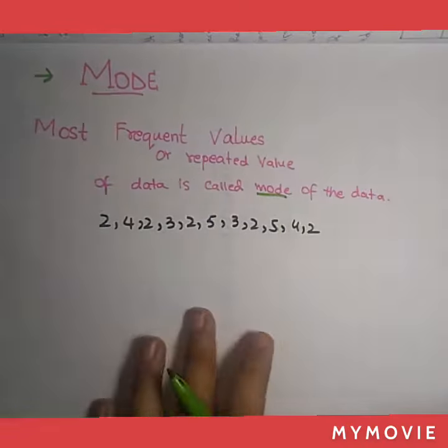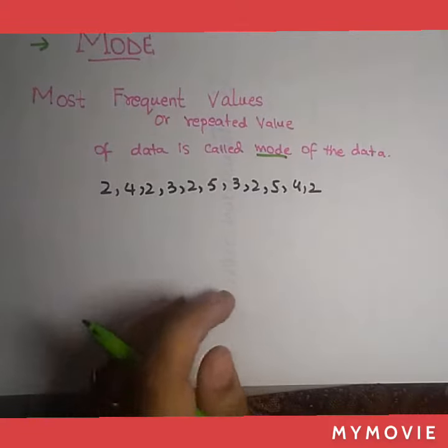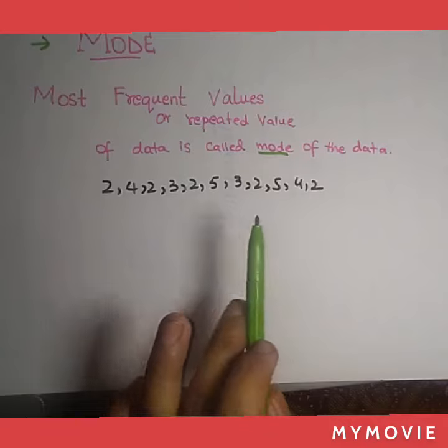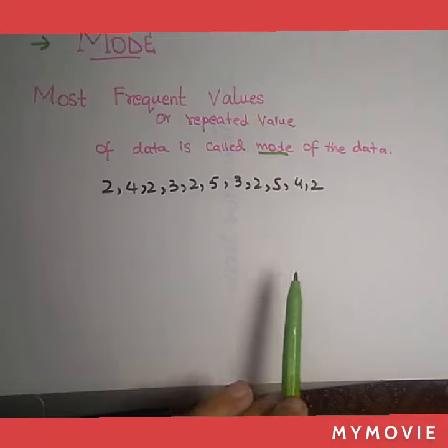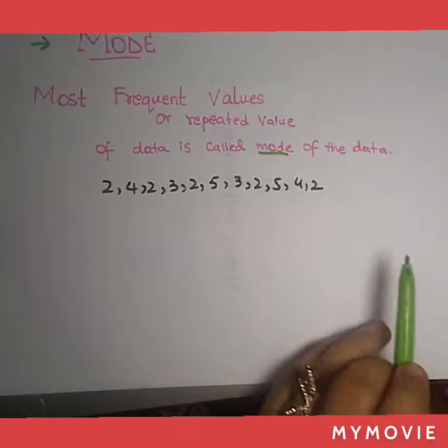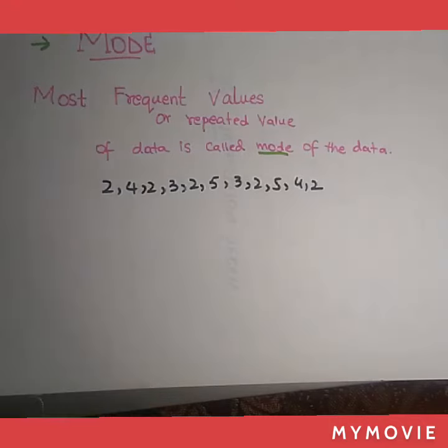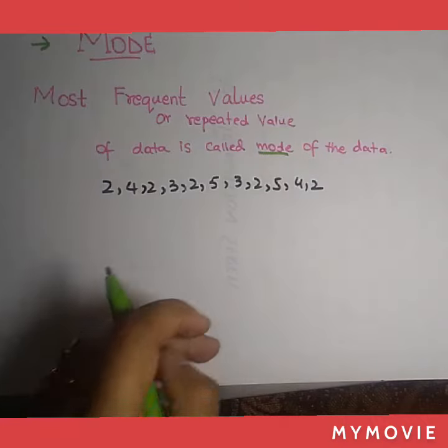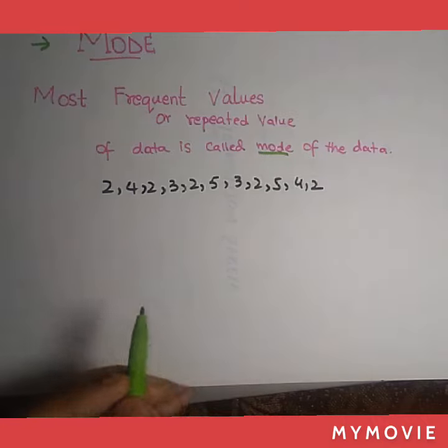Like in the given statement: 2, 4, 2, 3, 2, 5, 3, 2, 5, 4, 2. These values show that most of the values are repeating, but the value who's repeating the most, the greatest, is said to be the mode.